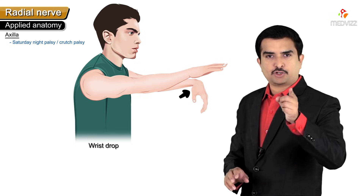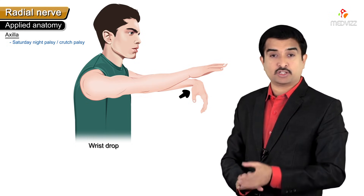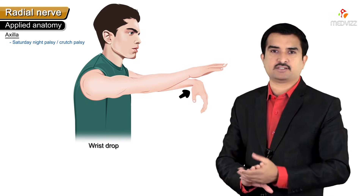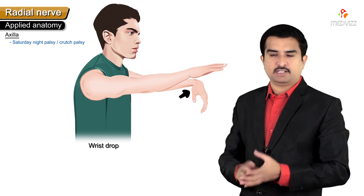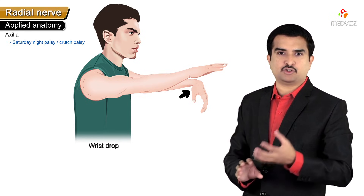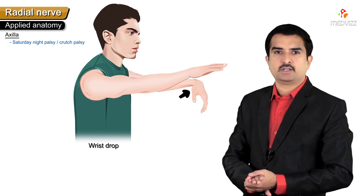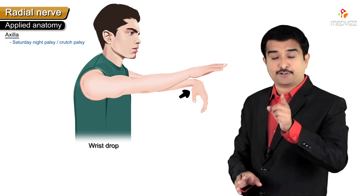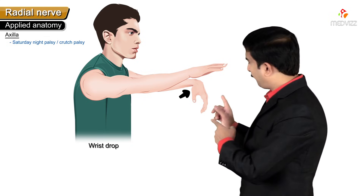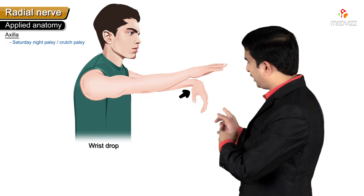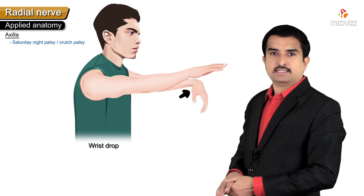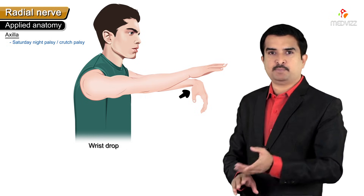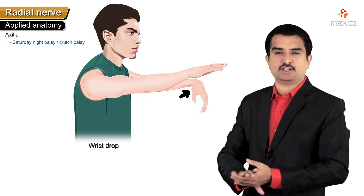When patients wake up after such compression, they suffer from wrist drop. Wrist drop is due to paralysis or weakness of the hand and finger extensors, causing decreased grip strength. The patient cannot extend the hand at the wrist joint - it remains in a completely flexed position.